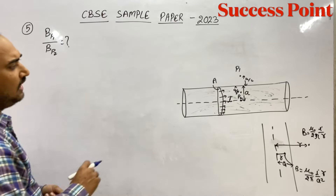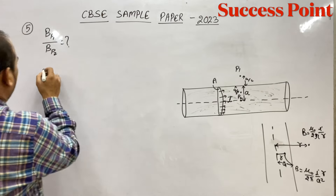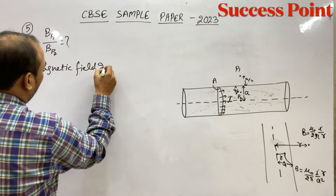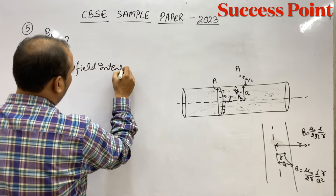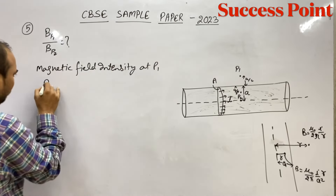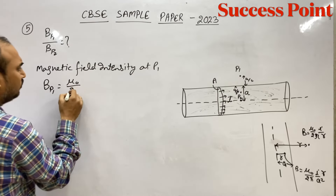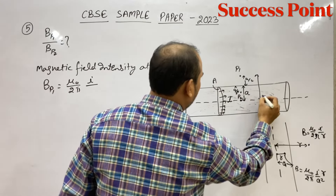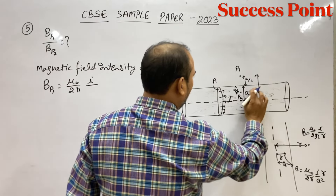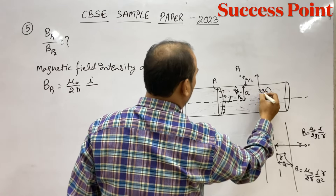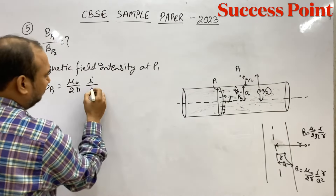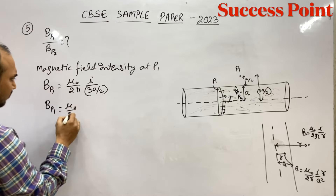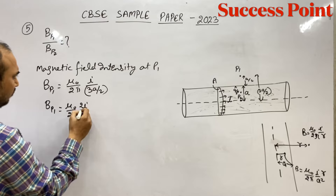अच्छा, तो पहले P1 point की बात करते हैं। BP1 क्या है? यह outside वाला point है, तो formula होगा B = (μ₀/2π) · (I/R)। यहाँ center से total distance: wire की radius A है और ऊपर A/2 और है, तो r = A + A/2 = 3A/2। इसलिए BP1 = (μ₀/2π) · (2I/3A)।